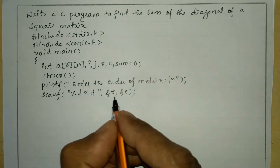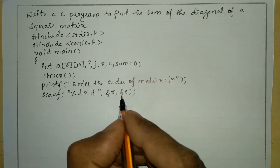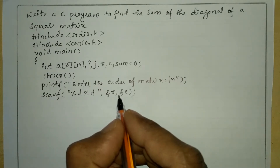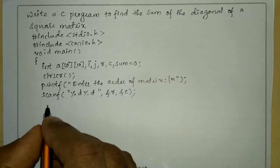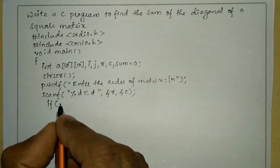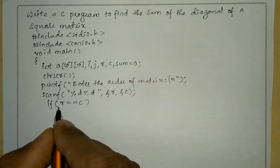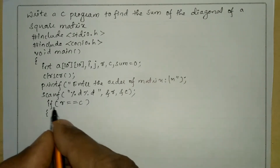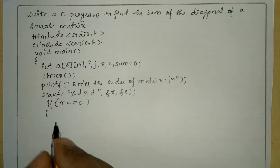After receiving the values for row and column, we check whether the entered numbers are equal or not — meaning whether the matrix is a square matrix or not. A square matrix means the number of rows must be equal to number of columns. We check this condition using if: if r is equal to c.